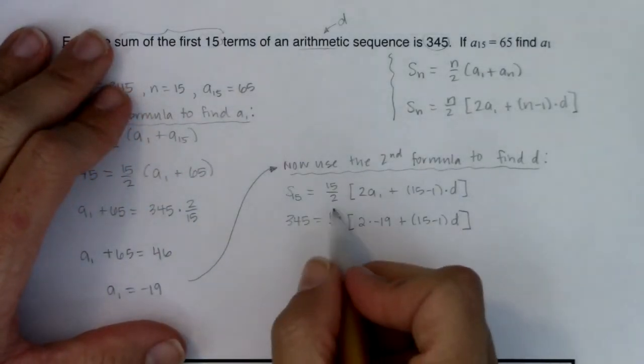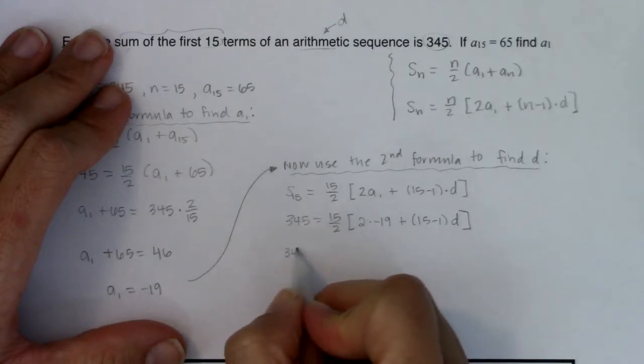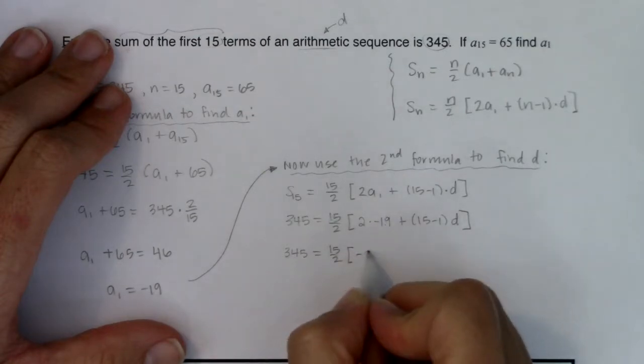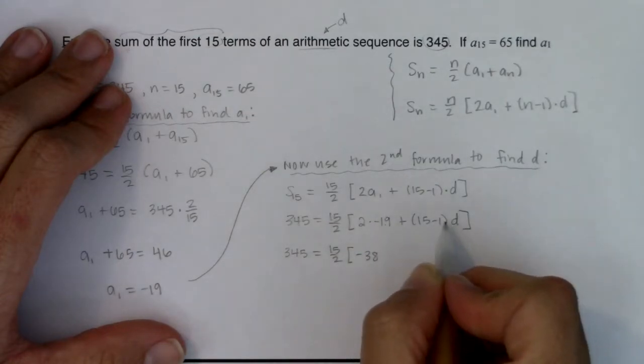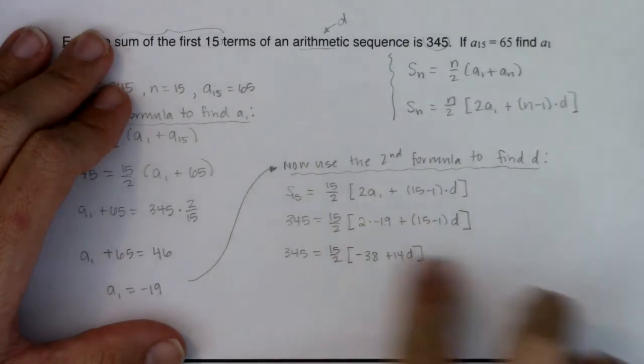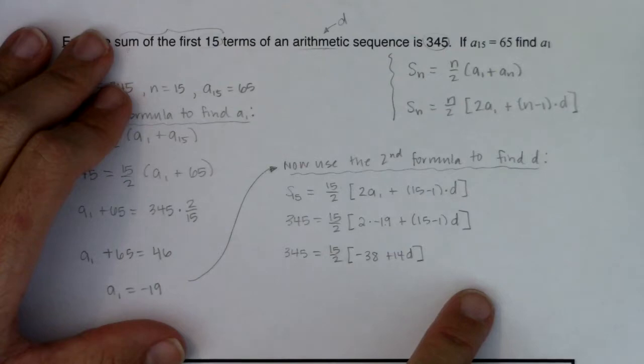So let's start doing this. We got 345, would be equal to, I'm going to do 15 halves. 2 times negative 19 is negative 38. And this is going to be plus 14d.